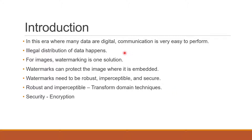In this era where many data are digital, communication is very easy to perform. As such, illegal distribution is also easy. For images, one partial solution to this is watermarking. Watermarking can protect the image where it is embedded, but this watermark needs to be robust, imperceptible, and secure. To ensure robustness and imperceptibility, we use transform domain techniques, and to ensure security, we perform encryption.